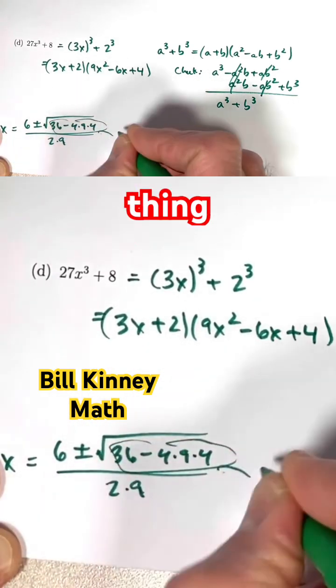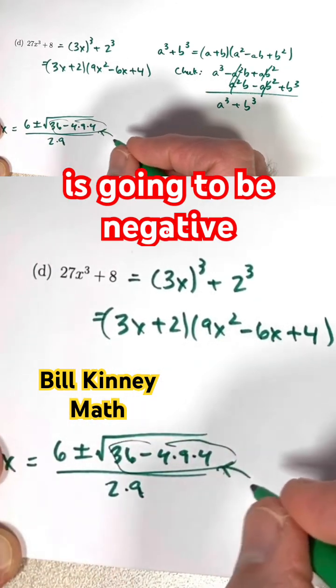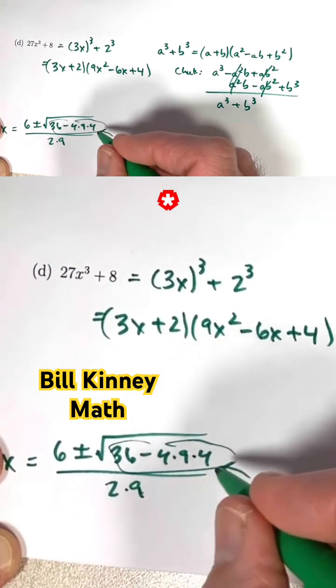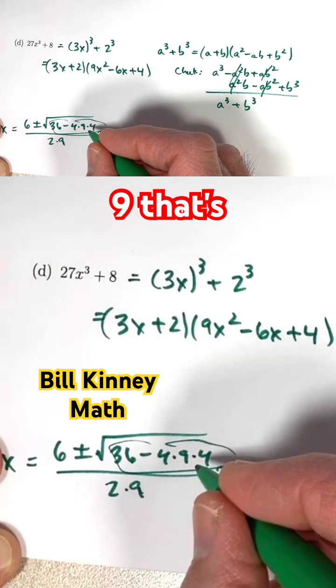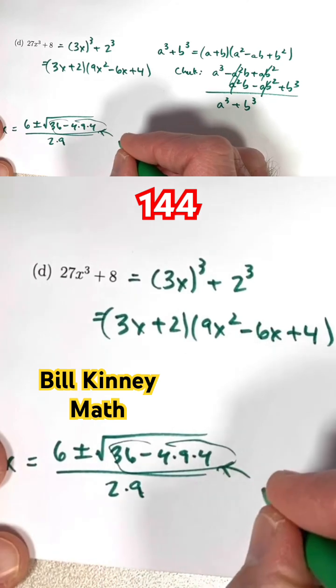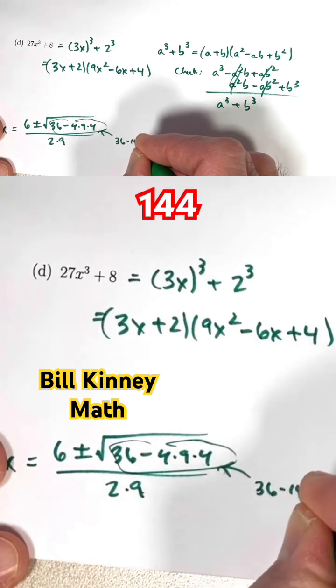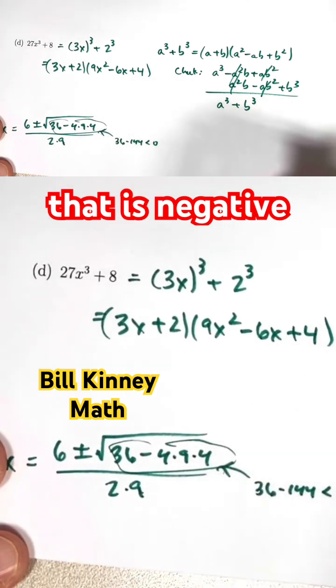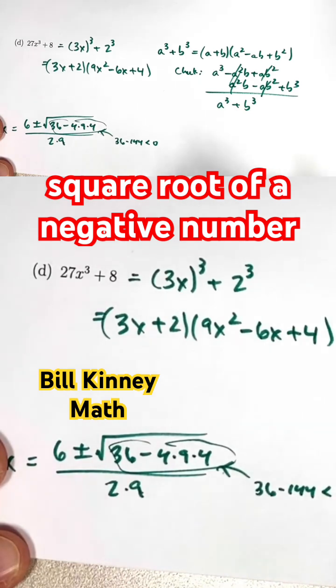And the key thing is this thing under the square root is going to be negative. 4 times 9 times 4, that's going to be 16 times 9, that's 144. 36 minus 144, the key thing about that is that is negative.